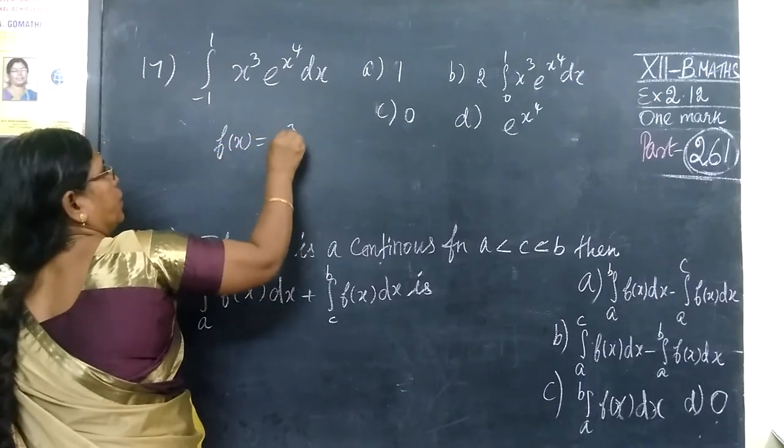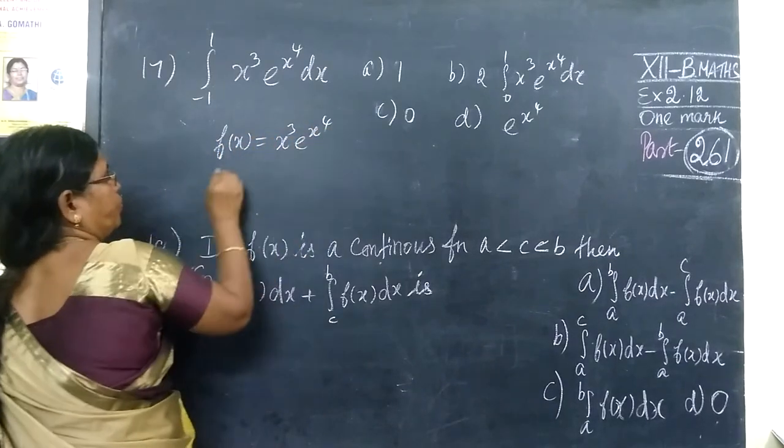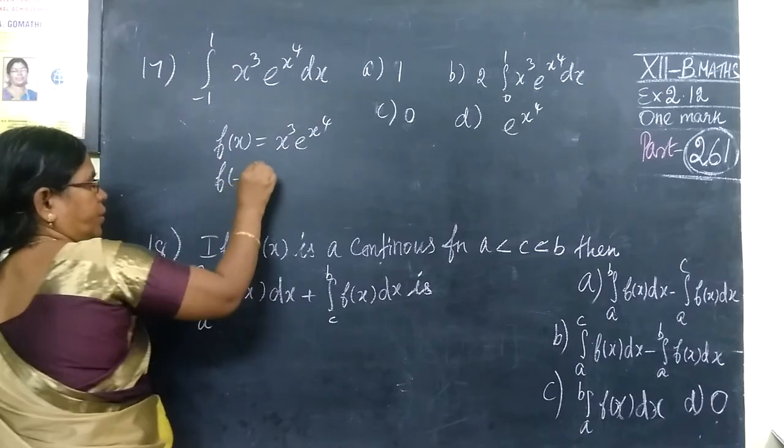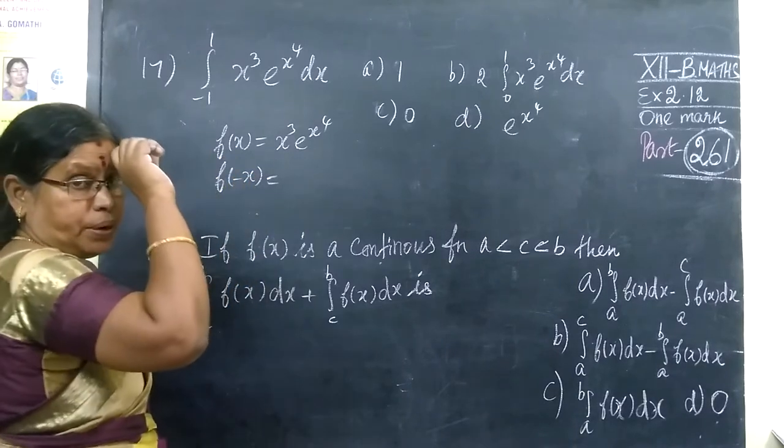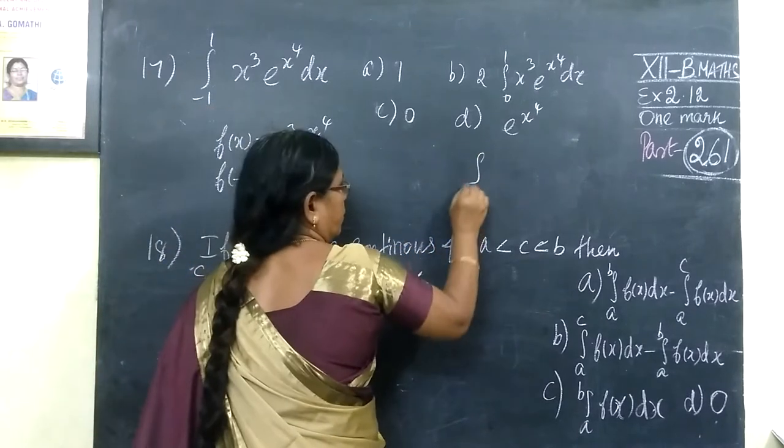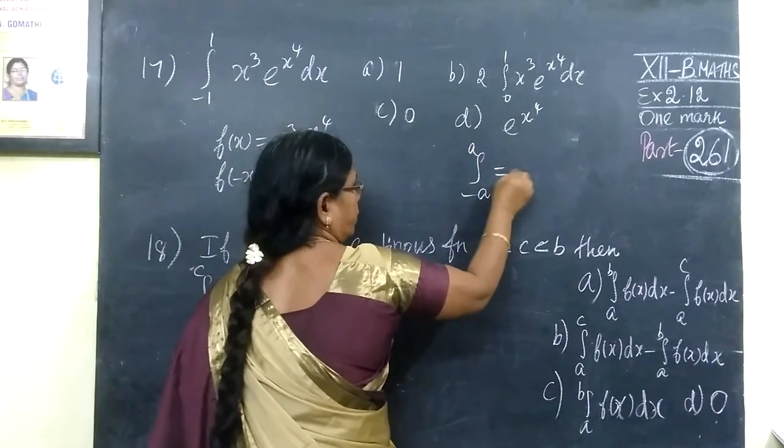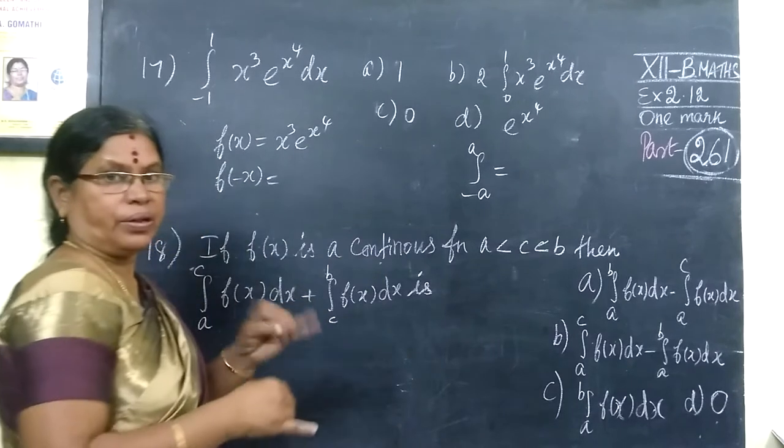Equal to x² e^(x⁴). F of minus x is equal to x² e^(x⁴). What is f of minus x equal to? x power 4. This one is integral minus a to a. This one is even function or odd function?